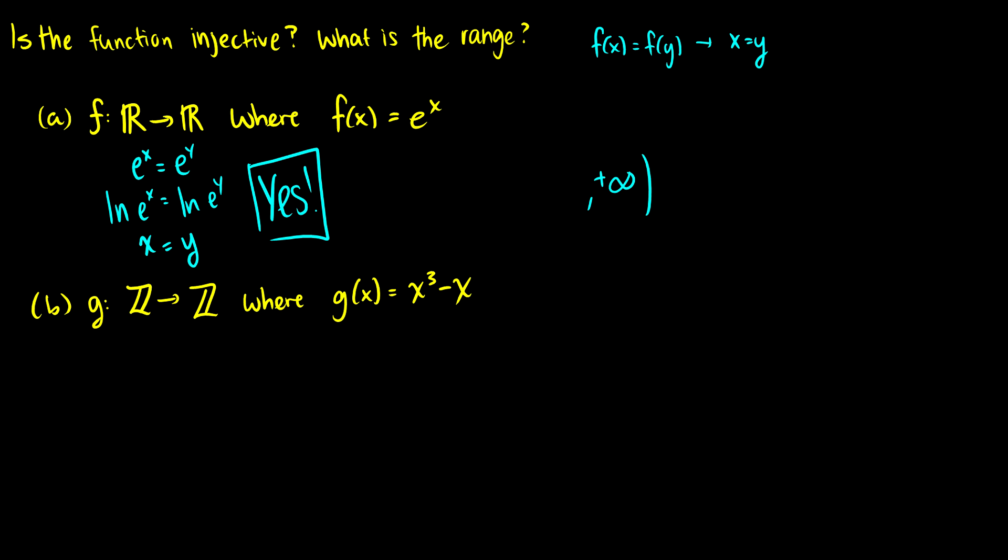Well, the smaller x you put in, the closer and closer it gets to 0, but it never quite touches 0, so our range is going to be from 0 to positive infinity, uninclusive.